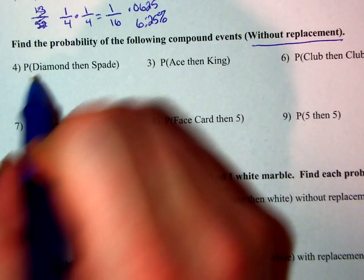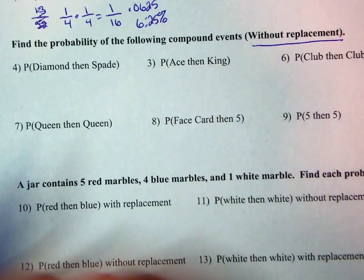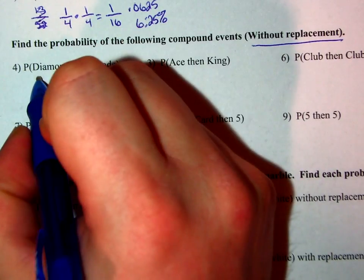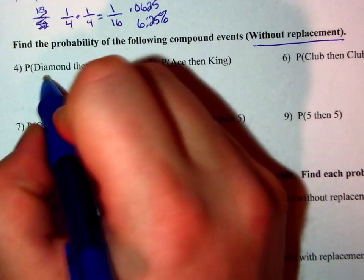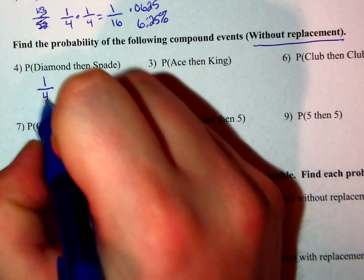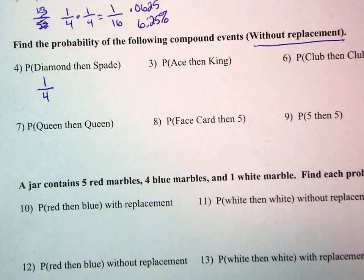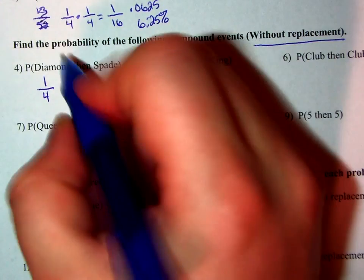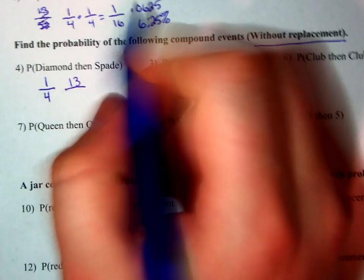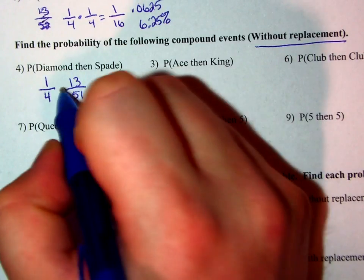So the probability of a diamond then a spade. Again, I have 13 diamonds in a suit of 52 cards, so that's going to simplify to 1 over 4. And I have 13 spades, but if I took one card out, I no longer have 52 cards, but rather I have 13 spades and 51 cards.